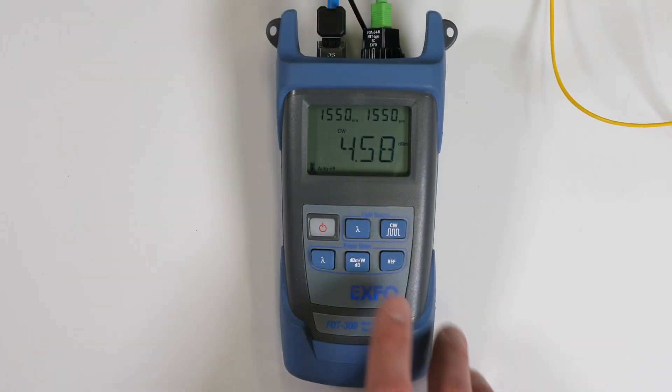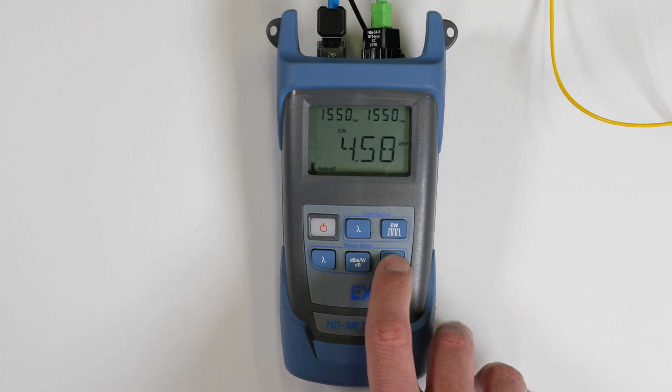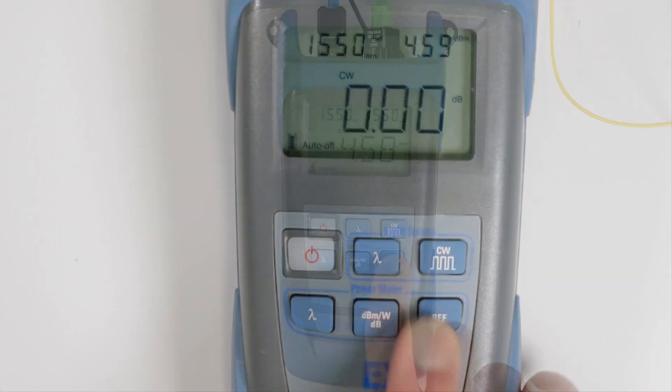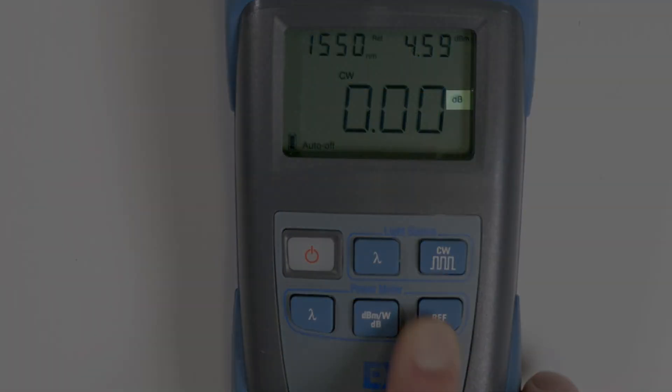Press and hold the reference button for a few seconds to set the current power as the reference. When testing the loss, the power will be displayed in dB, which is the relative power.